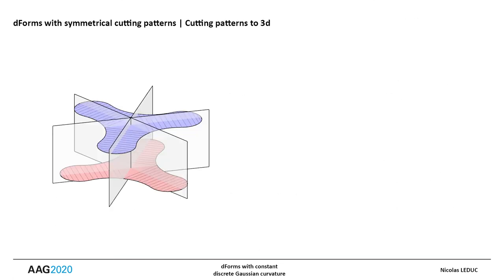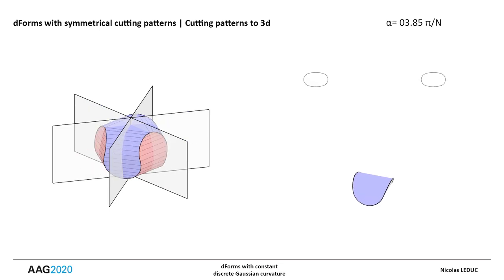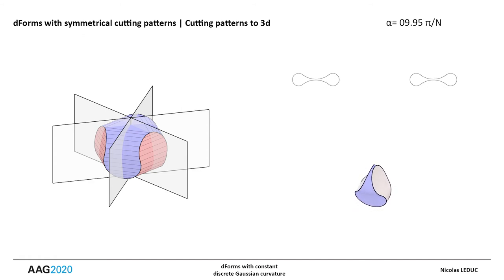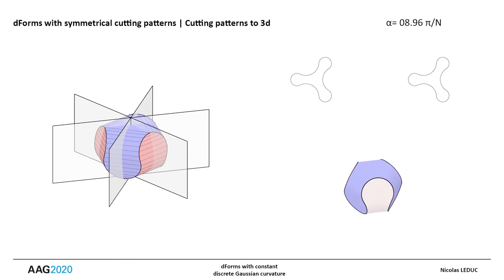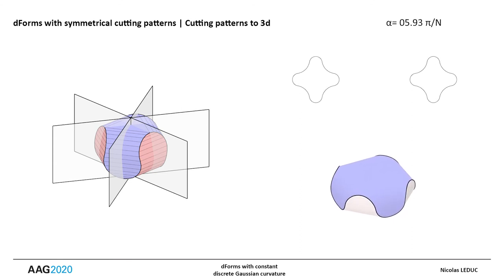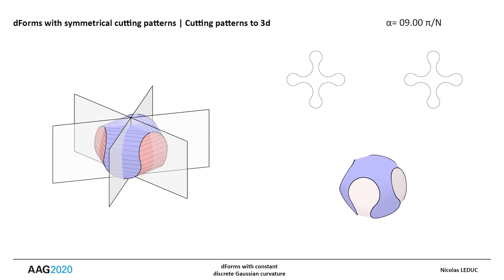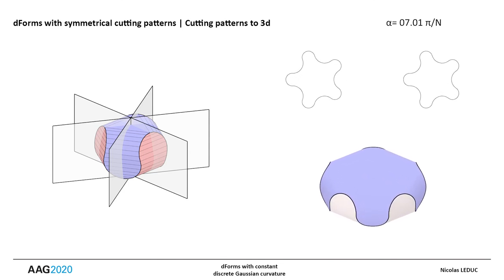The modeling of isometric deformation of flat shapes into three-dimensional surfaces is not a trivial exercise. But in our case, the symmetry conditions of the cutting patterns give us the possibility to find a closed-form solution for the geometry of the three-dimensional shape from its two cutting patterns.